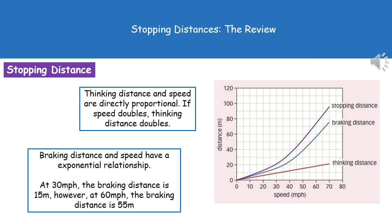The braking distance line, shown in blue on the graph, has a different relationship — it is exponential. For example, at 30 miles per hour the braking distance is 15 metres, but at 60 miles per hour it rises to 55 metres, which is more than double. So thinking distance is directly proportional to speed, whereas braking distance is exponential, meaning speed has a much greater effect on braking distance.